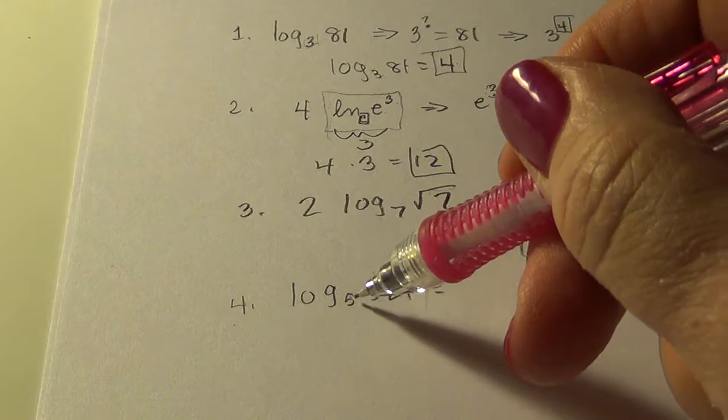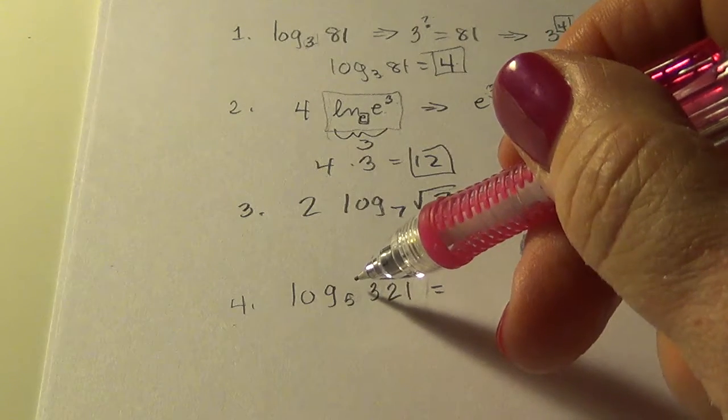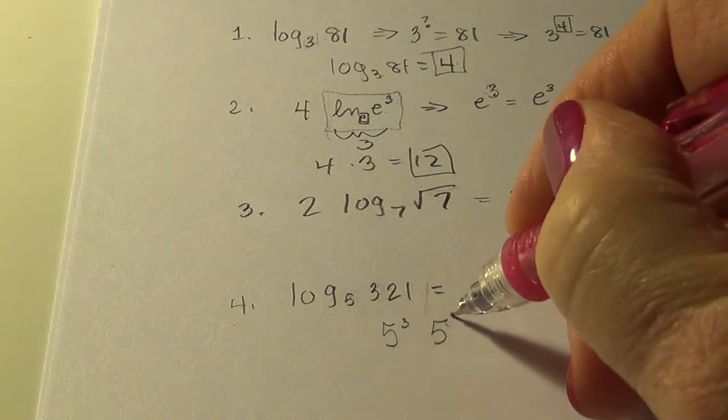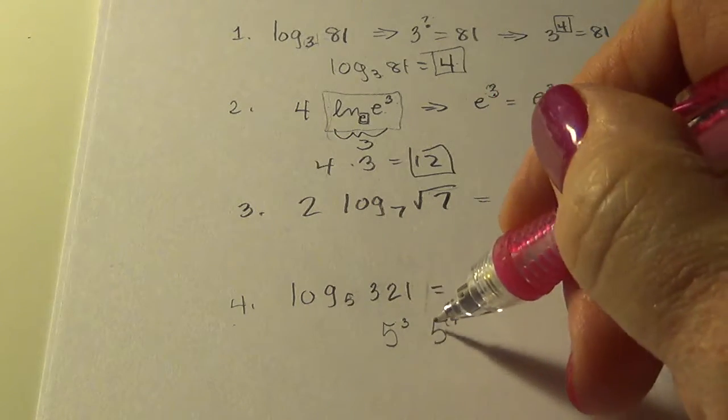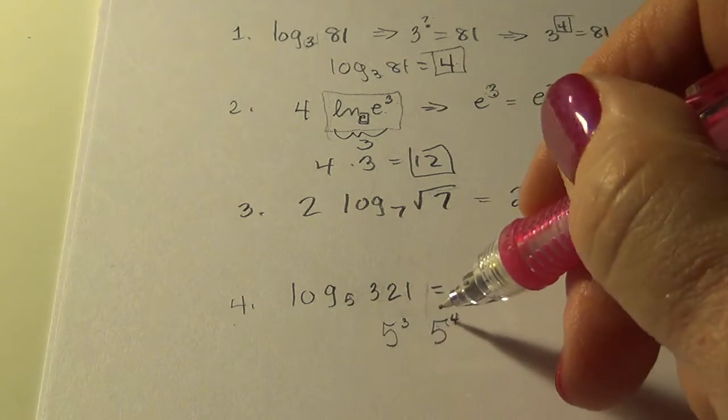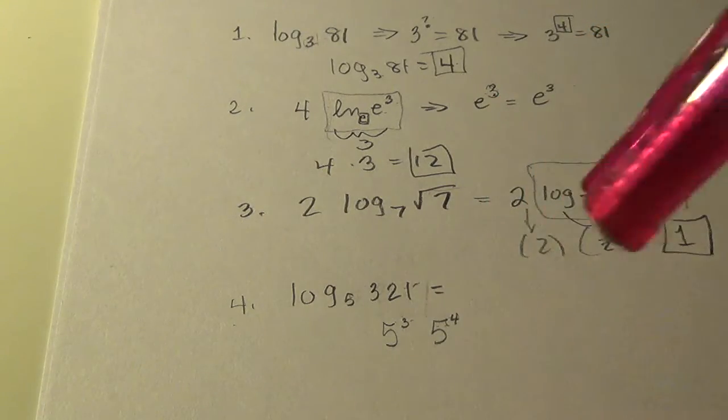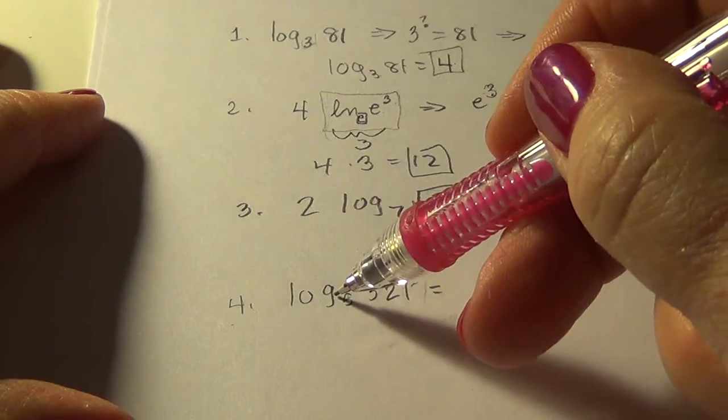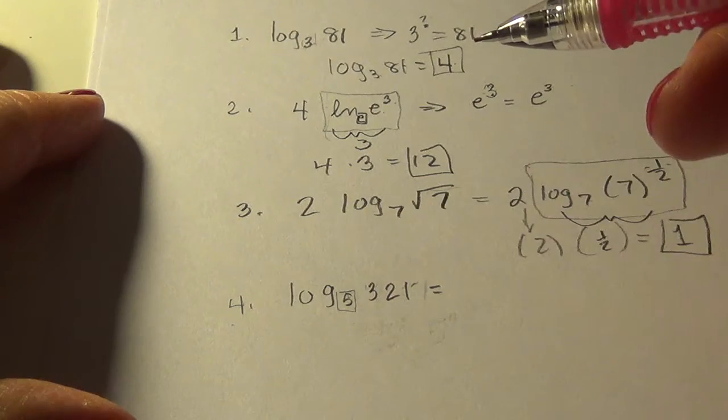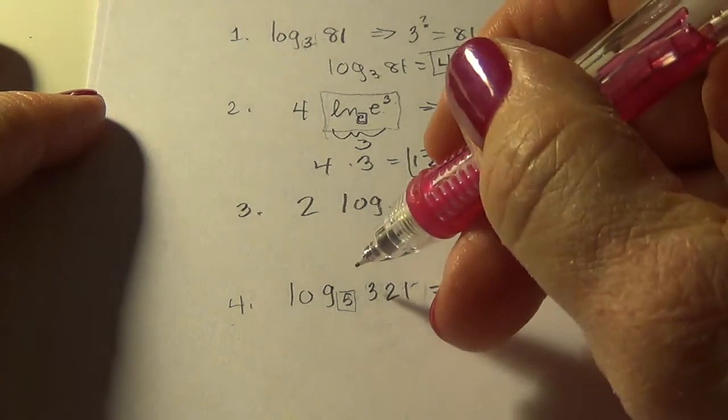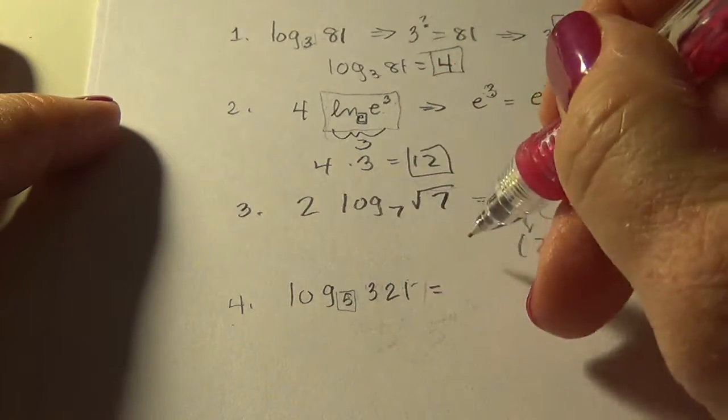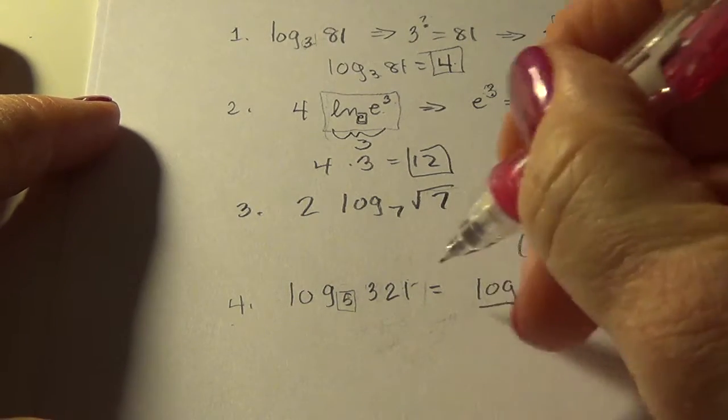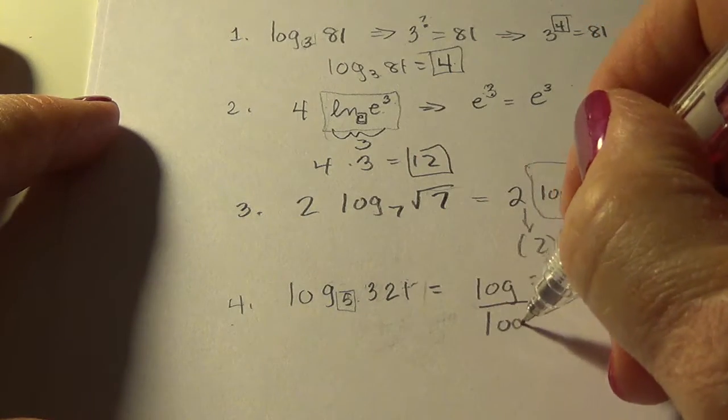It turns out that there is no whole number because five to the three is like 125 and five to the four is like 625. So there was no whole number that gives me 321 when I raise five to it. So we're going to have to recall how to get this out of our calculator. But there's no base five on most of our calculators. So we learned that and we proved why this was true. But I'm just going to go on what we do tonight.